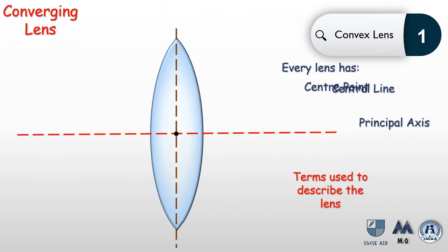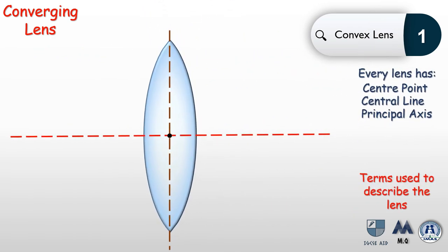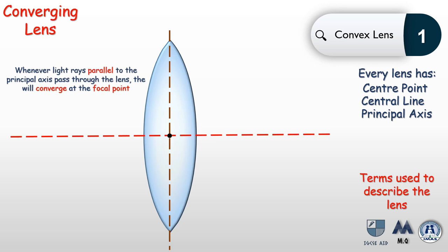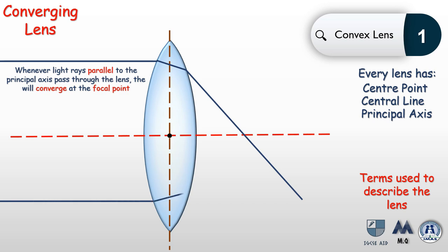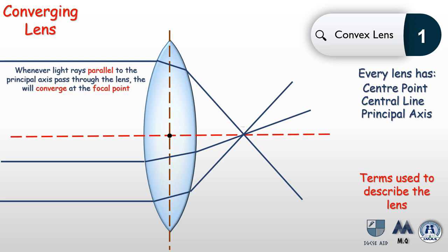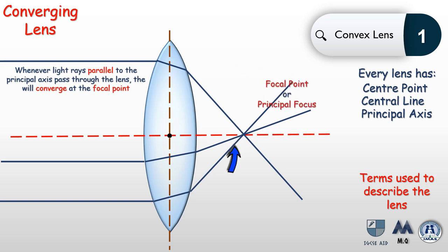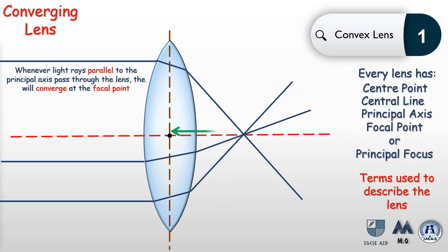Whenever light rays parallel to the principal axis pass through the lens, they will always converge at a point called the focal point, also known as the principal focus. Additionally, the focal length is the distance between the center point of the lens and the principal focus.